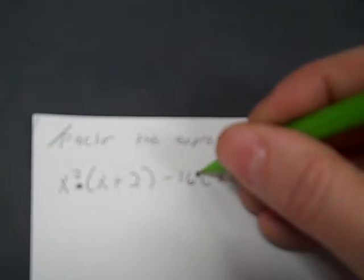Okay, now in our next packet, this is just a setup for the packet that comes after this. You have x to the second multiplied by the parentheses x plus 2 minus 16 multiplied by the parentheses x plus 2. Here's what you're going to do here.